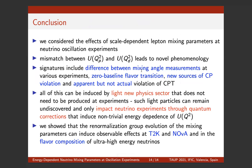In conclusion, we considered the effects of scale-dependent lepton mixing parameters at neutrino oscillation experiments. The crucial point is the mismatch between the PMNS matrix at the production and detection momentum transfers, which leads to rich new phenomenology: differences between mixing angle measurements at various experiments, zero-baseline flavor transitions, new sources of CP violation, and apparent — but not actual — CPT violation. All of this can be induced by a light new physics sector that does not even need to be directly produced; the effects are purely at the quantum level, influencing the PMNS matrix elements across the relevant energy scales. I showed results for T2K and NOvA and briefly illustrated the effect on the flavor composition of ultra-high-energy neutrinos. Thank you.